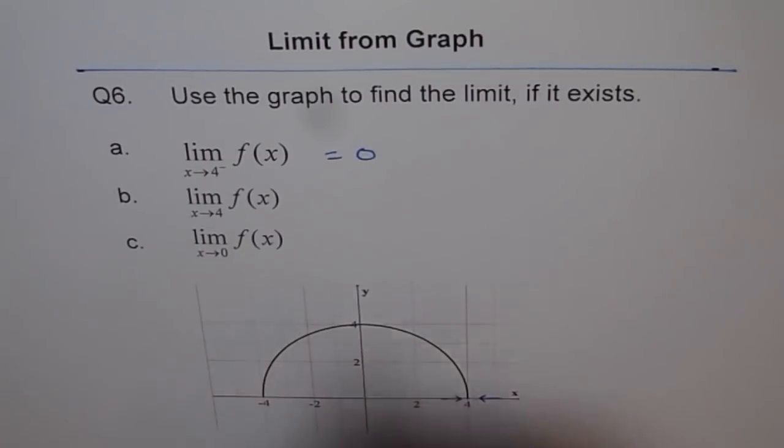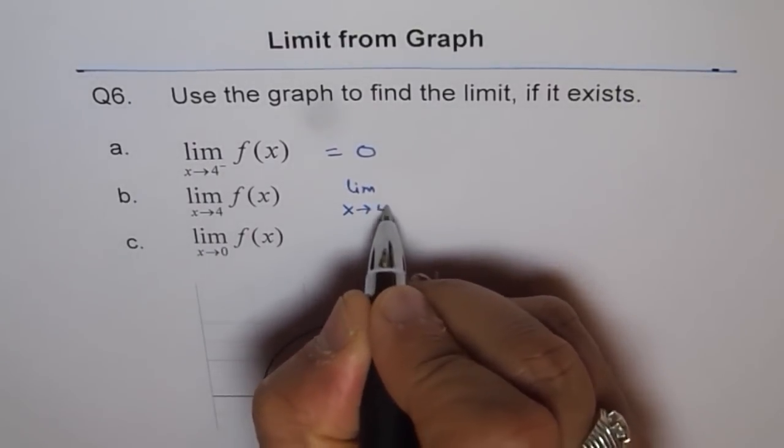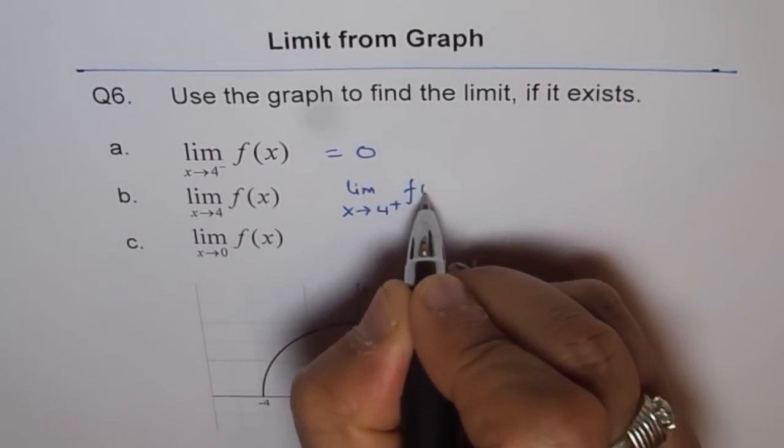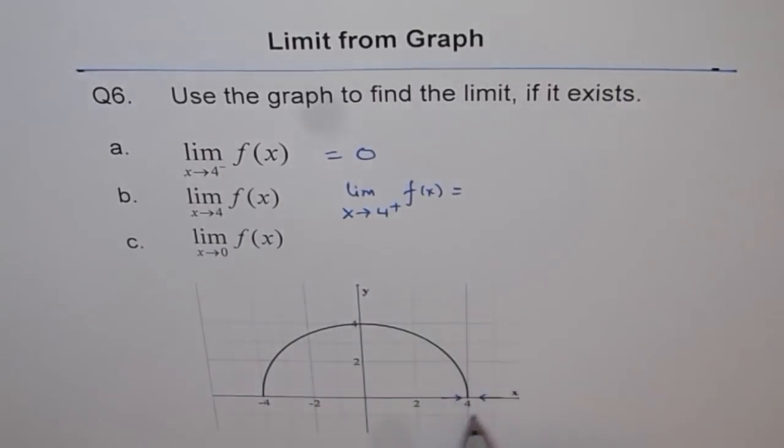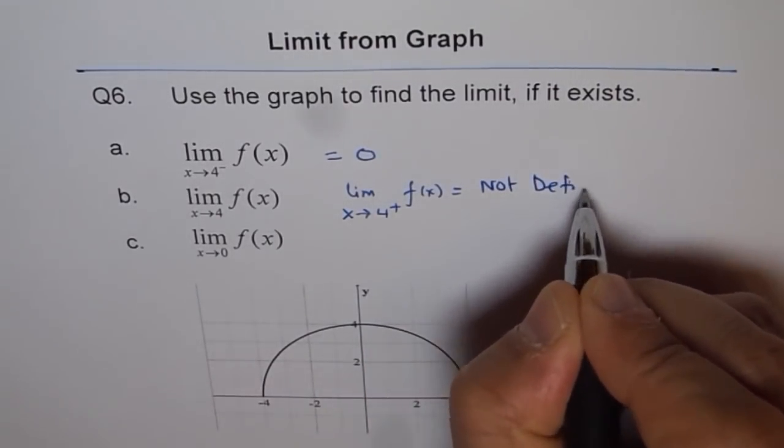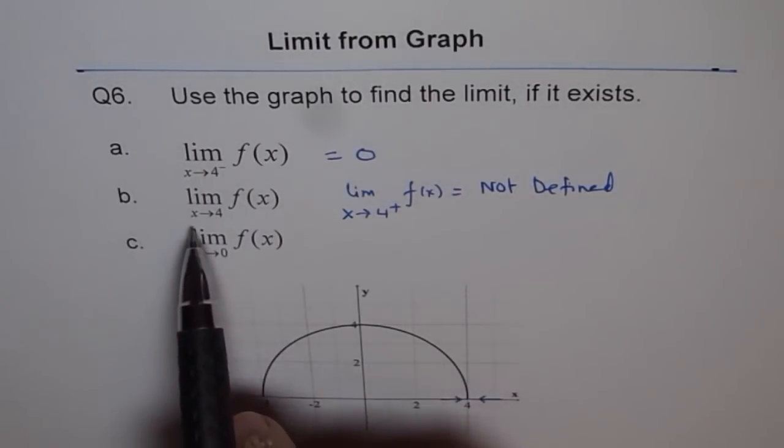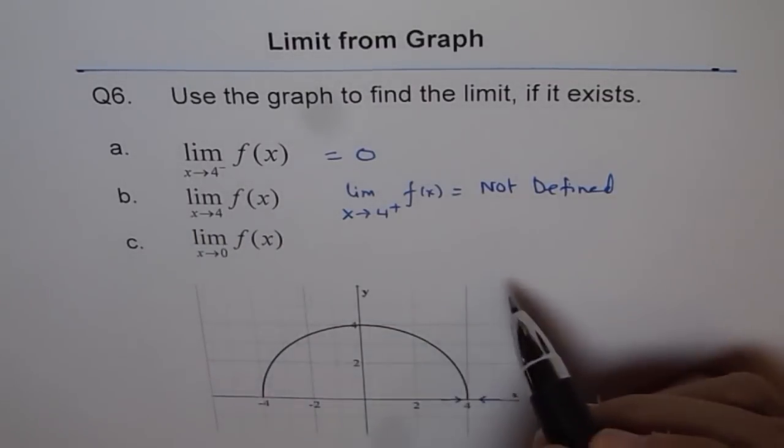The function is not defined. Since the limit of x when you approach 4 from the positive side for f(x) is not defined—you see, not defined because the function is defined only from minus 4 to plus 4—this limit is not defined and therefore the limit of the function as x approaches 4 does not exist.